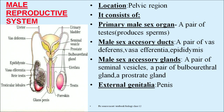The location of the male reproductive system is the pelvic region, that is the lower abdominal region. The primary male sex organ consists of a pair of testes which produce sperm. Male sex accessory ducts include a pair of vasa efferentia, epididymis; male sex accessory glands include a pair of seminal vesicles, a pair of bulbourethral glands, and a prostate gland; and the external genitalia is the penis.